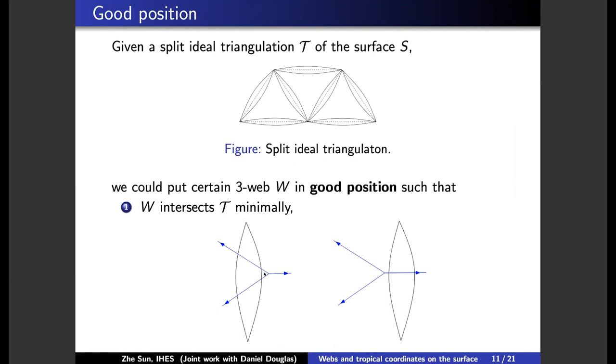we can move these dots smoothly to here to get the intersection number only two. So we decrease the intersection numbers in this way. And actually we can do it so that the intersection number is minimal.